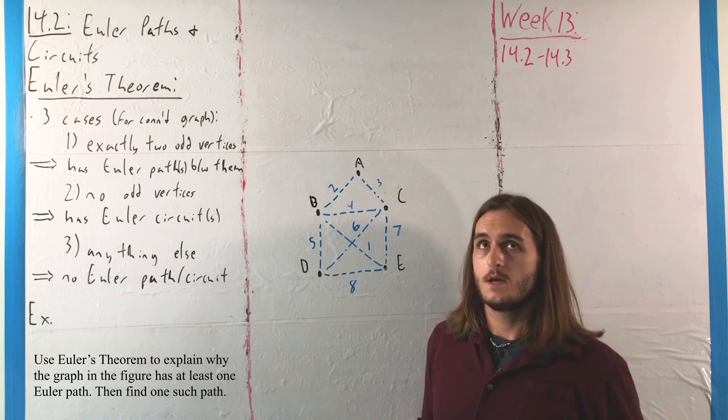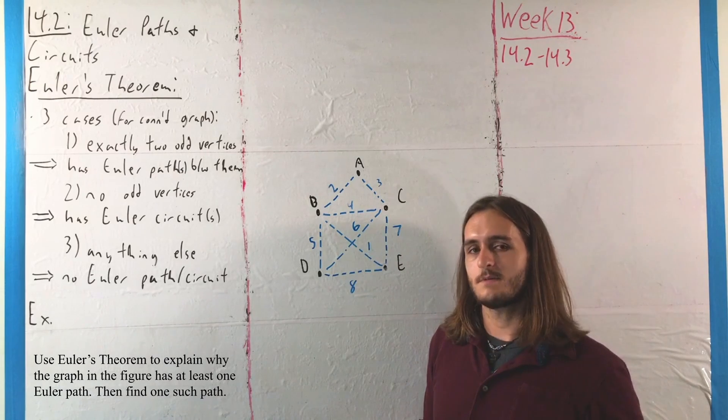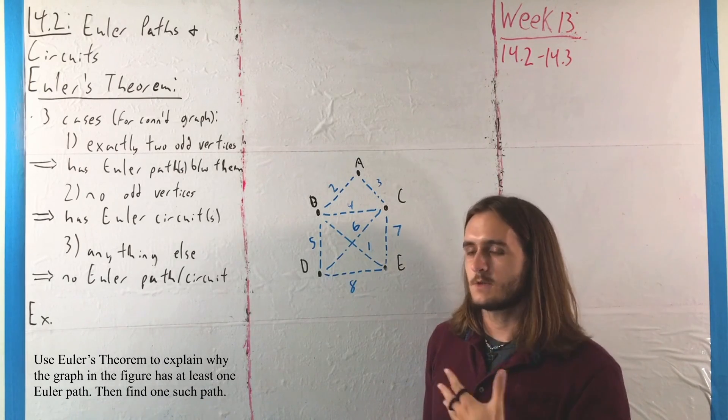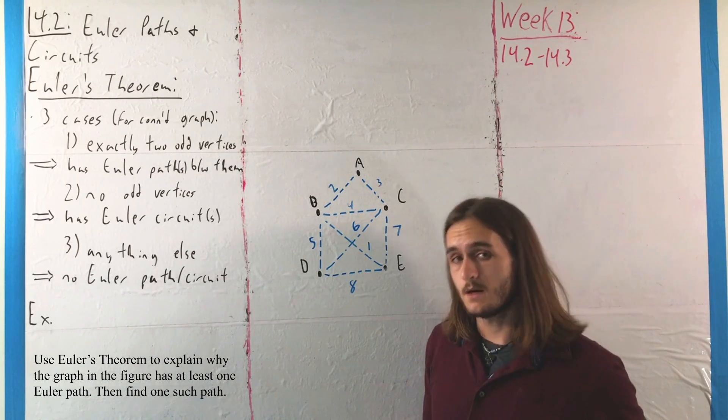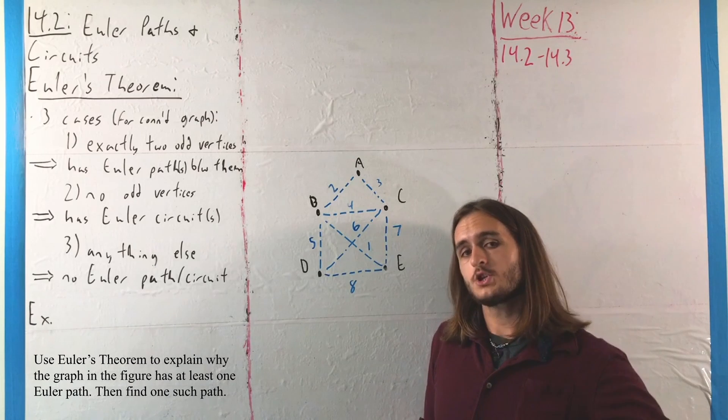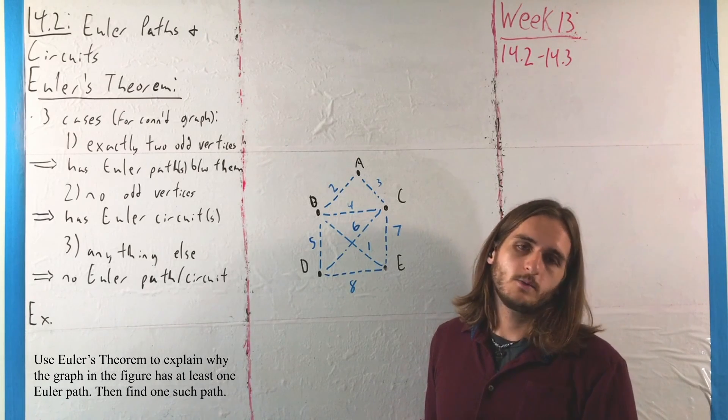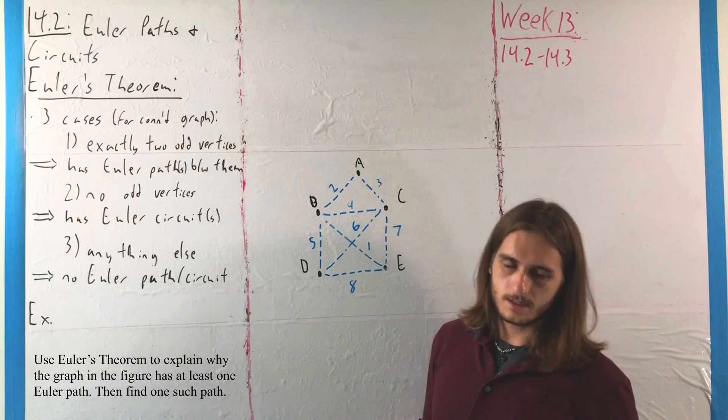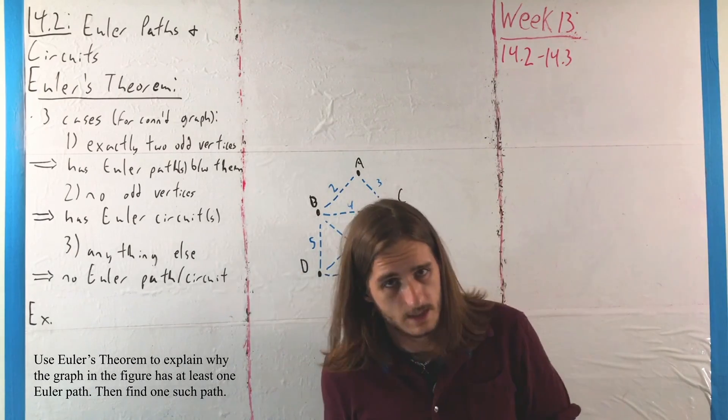Our sort of trial and error method gives us a whole bunch of different options. Again, we're going to see a little bit more effectively how we can find these things, but for now we're just getting some practice with what we're looking for in terms of Euler's theorem. We'll finish here with one more case where we are going to see an example when this doesn't work - that is, we're going to look at something for case 3.